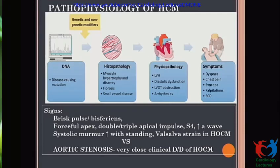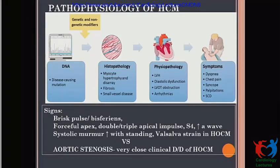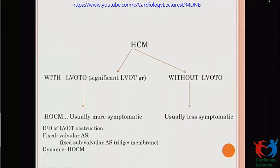Looking at the signs: due to forceful contraction, the pulse may present as brisk. In the obstructive variety we can get a bisferiens pulse with spike-and-dome pattern, forceful apex, double or triple apical impulse, S4, and prominent A wave in JVP due to significant LVH. A close differential diagnosis is valvular aortic stenosis. The systolic murmur in HOCM increases with standing and Valsalva, unlike aortic stenosis, which also has radiation to the carotids and an anachrotic pulse.